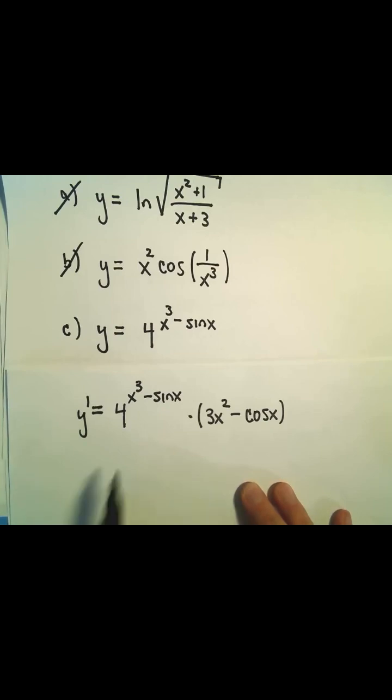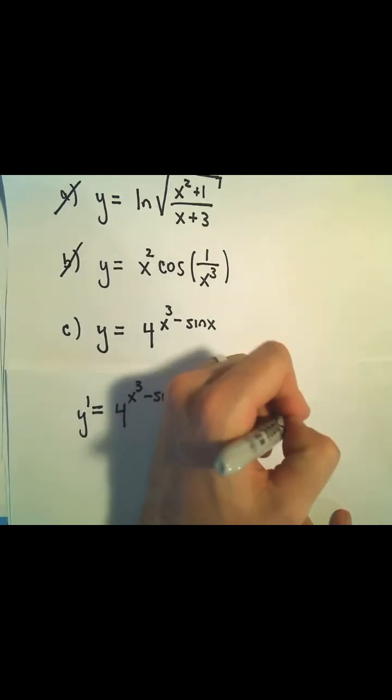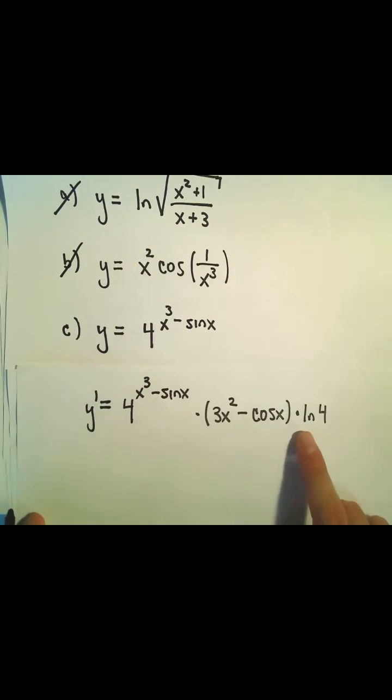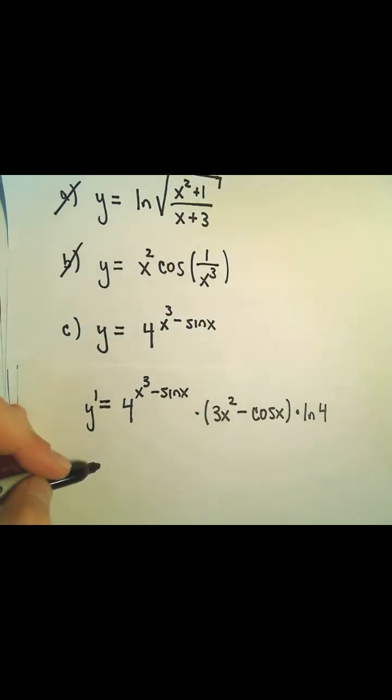And last but not least, recall when we have a number, a base other than e, we have to multiply that by the natural logarithm of the base. Again, we even do it when we have base e. It's just that ln of e equals 1, so we don't bother to write it.